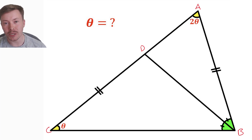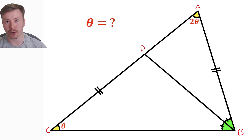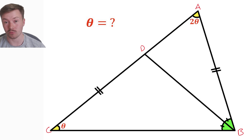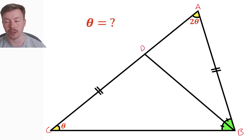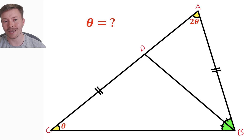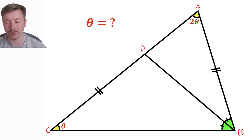Welcome back to another Mr. Talc Maths video. This week's problem is about this triangle: we need to work out the value of theta. There are a few special properties — an interior line bisecting the bottom right angle at B, and the length from C to D equals the length from A to B, indicated by the tick marks. We need to find angle theta at C, and then 2-theta at A follows.